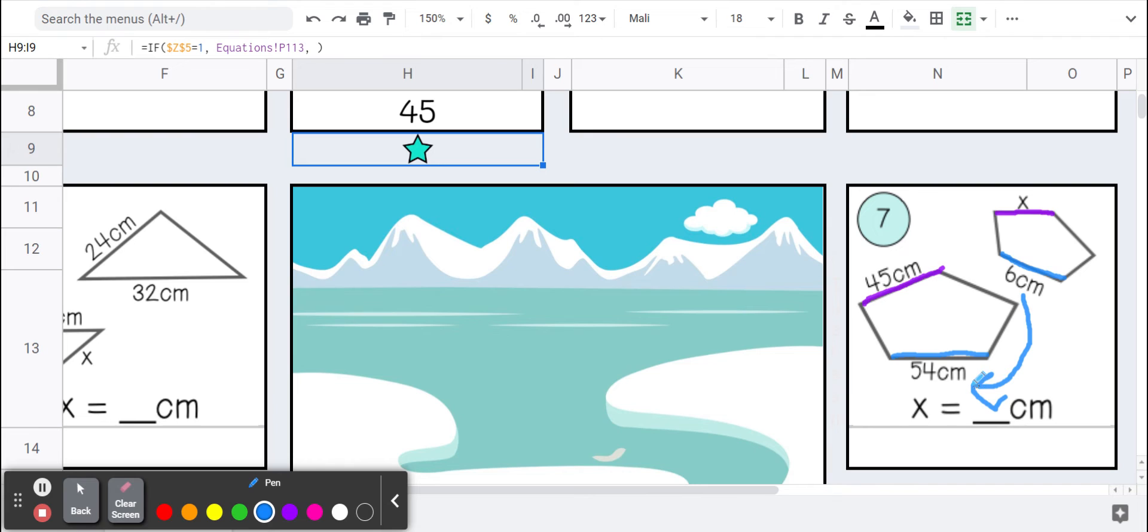6 times what is 54? That would be 9. Now this is just a coincidence. Most of them are not going to be times 9.